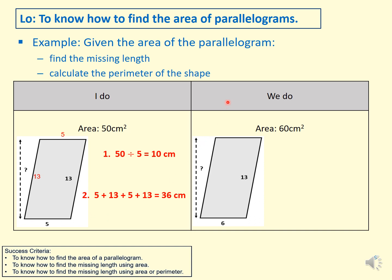Pause the video and have a go with the video question. You have the area and need to find the perpendicular height first: divide area by base, so 60 divided by 6 equals 10 — the perpendicular height is 10 cm. For the perimeter, start from one corner, go around the shape, and add up everything. I do 6 plus 13 plus 6 plus 13, which equals 38 cm. The perimeter of that parallelogram is 38 cm. Well done if you managed to do this one right.